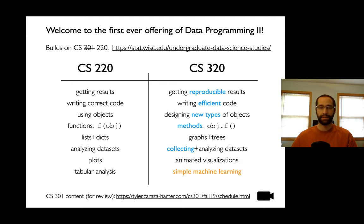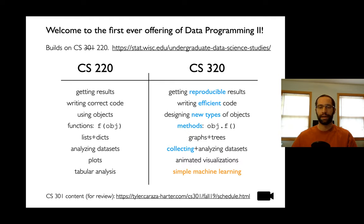We're going to create complex structures like graphs and trees, which will help us reason about things like the internet — which is a big graph of web pages. In CS220, we were strictly just given data sets to analyze. Now we're going to look at cases where we can build our own data sets from scratch, either by collecting data on the web or by taking some measurements. We're going to make our plotting and visualization more advanced, doing things like geographic maps and animations. And at the end of the semester, we're going to do some simple machine learning — can we predict some columns in a table from the other columns? If it's been a while since you took CS220 and you want to review, I have a link at the bottom; I recorded all my videos from that semester so you can go back and review anything you're rusty in.